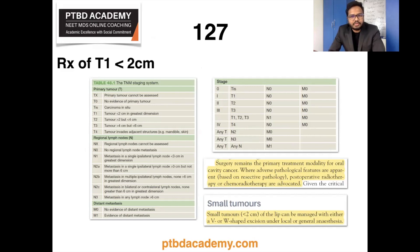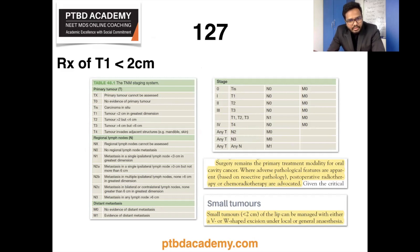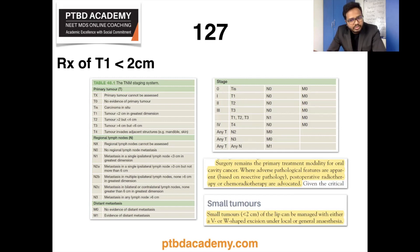Moving on, treatment of T1 tumor — when the size of the tumor is less than 2 cm. You can see the TNM staging system on the left. Based on Bailey and Love, surgery remains the primary treatment modality for oral cavity cancer where adverse pathological features are apparent; post-operative radiotherapy or chemotherapy are advocated depending on the case. Small tumors less than 2 cm of the lip can be managed with either a V or W excision under local or general anesthesia.